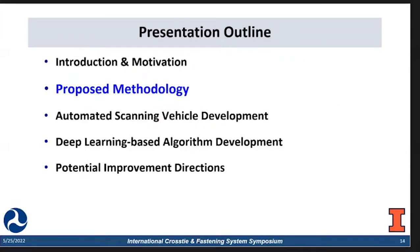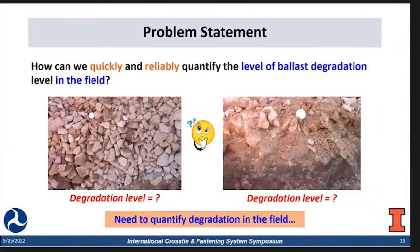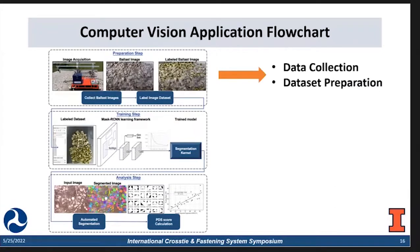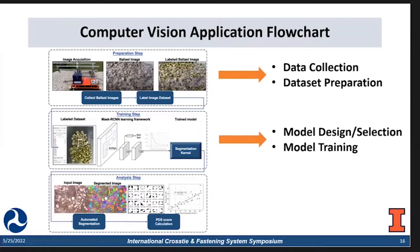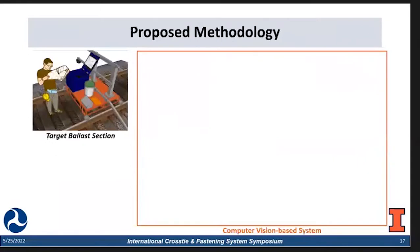Let me go into the proposed methodology section. The problem statement is: how can we quickly and reliably quantify the level of ballast degradation in the field? Here is the computer vision application flowchart. As the first stage, we do data collection — collecting images from different sources, sorting and picking the good ones, labeling them, and preparing our database. Then we design our own model using state-of-the-art ideas customized to our requirements. We train the implemented model with the established dataset, and finally with the well-trained model, we conduct the image segmentation task and perform results analysis.